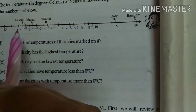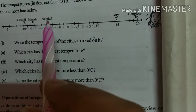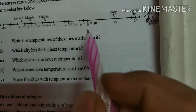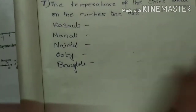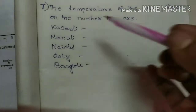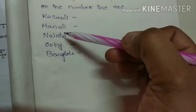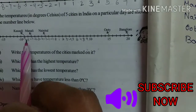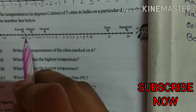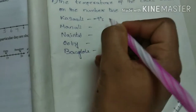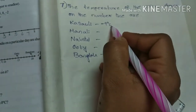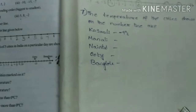How many cities are there here? 5 cities: Kasavali, Manali, Naintal, Ooty, and Bangalore. So write like this — temperature of the cities shown on the number line are: Kasavali is at minus 9 degrees Celsius. Manali is at minus 7 degrees Celsius. Naintal is at minus 3 degrees Celsius. Remember, it is compulsory to write degrees Celsius.